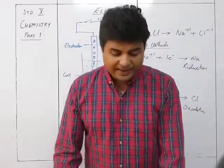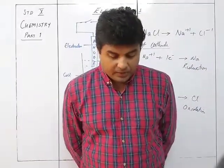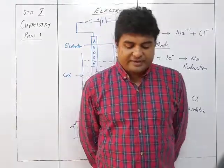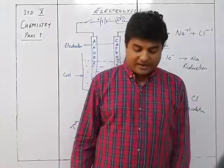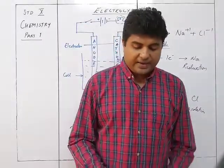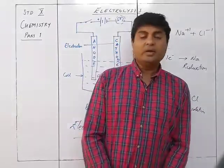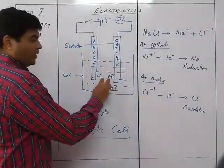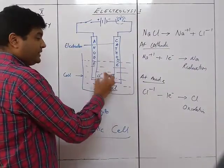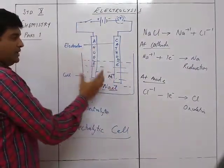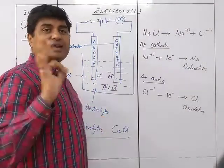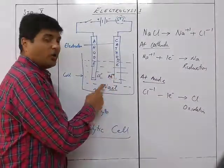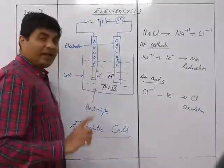Now let's see the characteristics of electrolysis. First, the passage of electricity through the electrolyte causes metallic cations to migrate towards the cathode and non-metallic anions to migrate towards the anode. In NaCl, the positive ion (Na⁺) is attracted towards the cathode and the negative ion (Cl⁻) towards the anode. Metals and hydrogen always travel to the cathode, whereas all non-metals travel towards the anode.